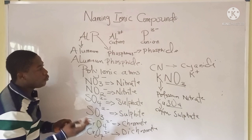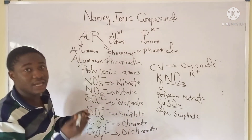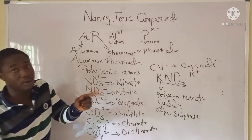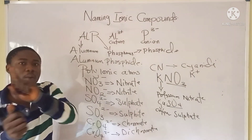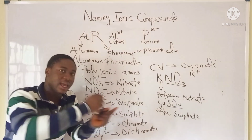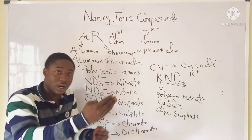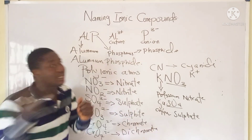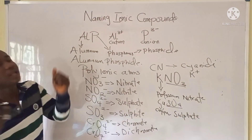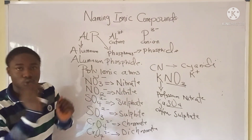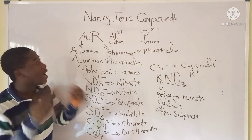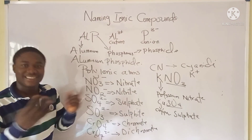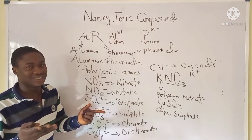We have covered various names of ionic compounds. Remember, for a compound to be ionic it must have charged ions — the cations and the anions. This is how to name ionic compounds. Thanks for watching.